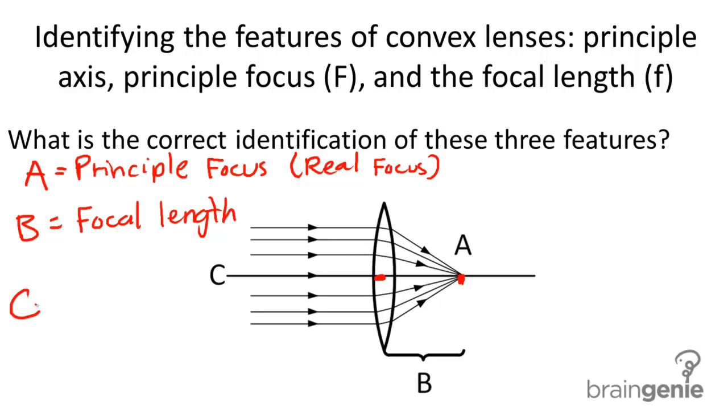And then finally, C is indicating on this little axis here. C is the principal axis - the axis that crosses through the midpoint of the lens as well as the principal focus.